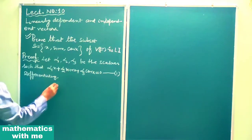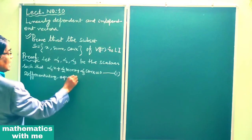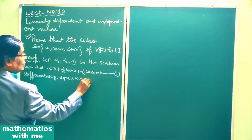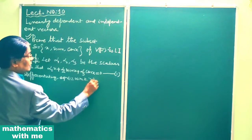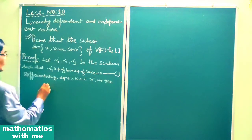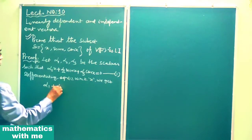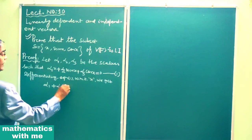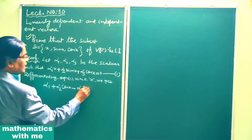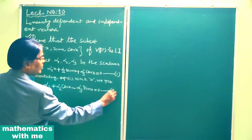Differentiating equation 1 with respect to x, we get α1 + α2·cos x − α3·sin x = 0. This is equation 2.